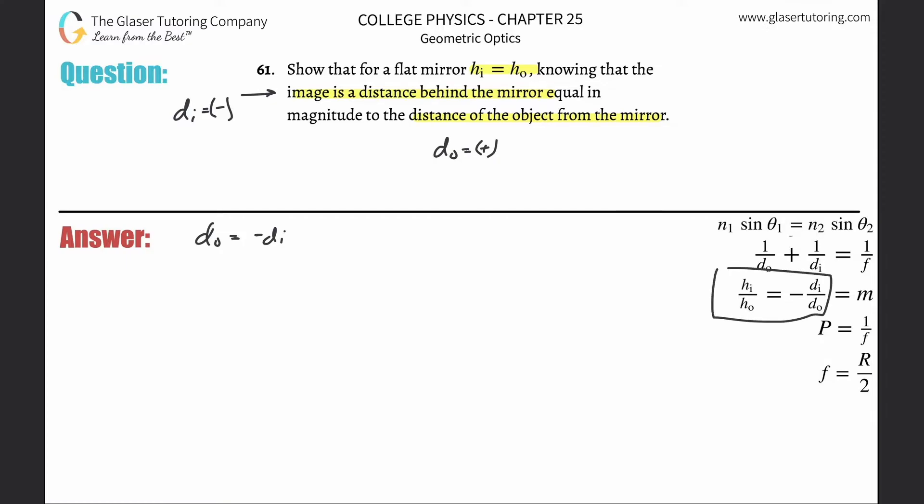So what I'm going to do is use this part of my magnification equation. This says that the height of the image divided by the height of the object will be equal to negative DI over DO.